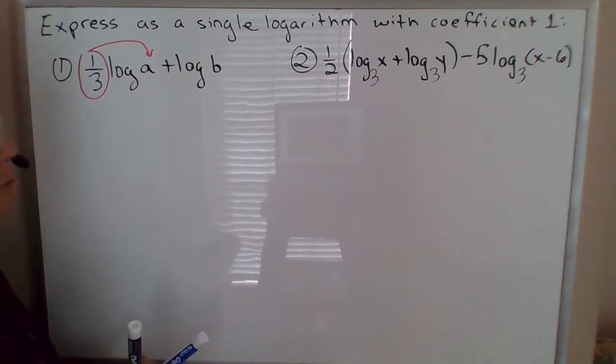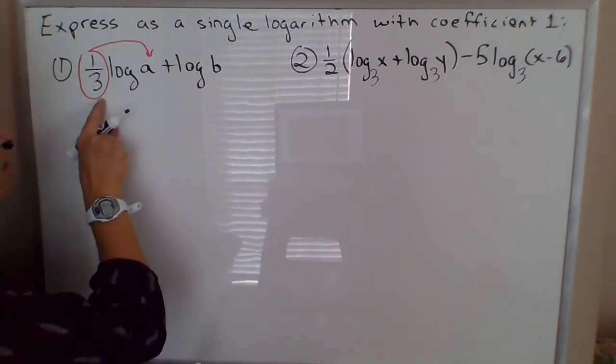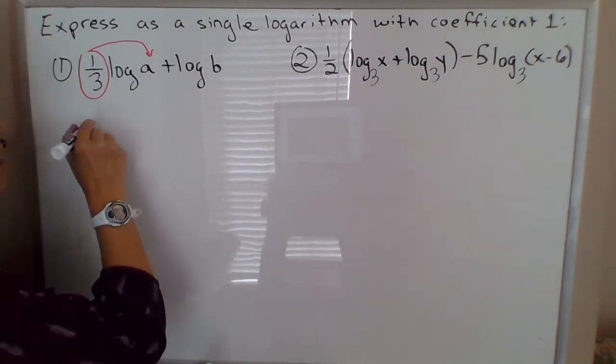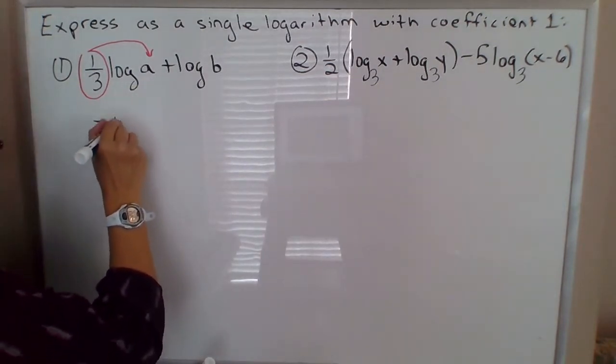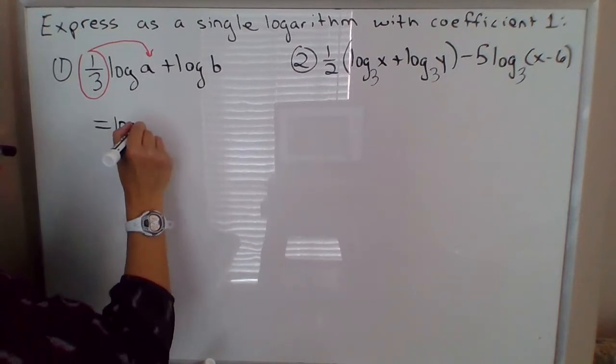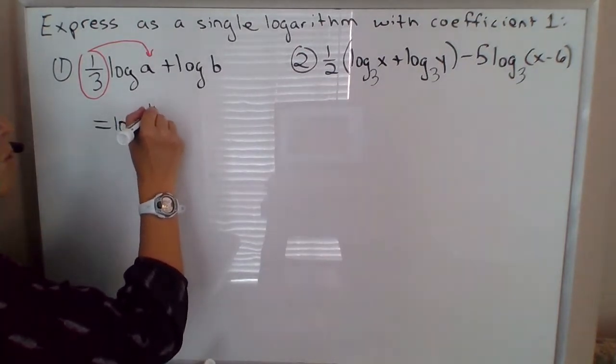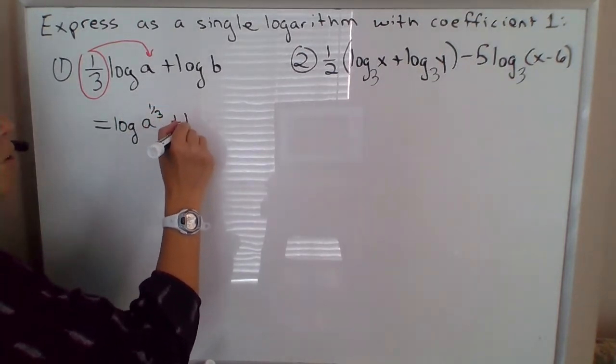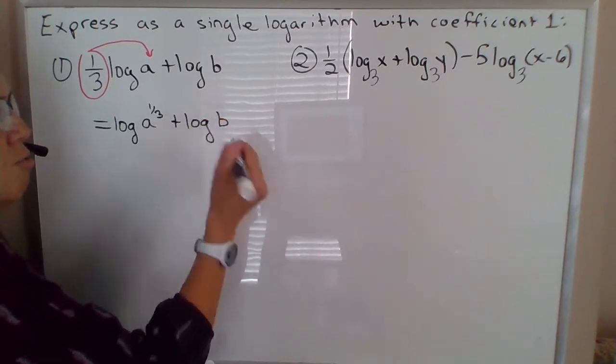So focusing on this example number one here, the first thing that I would recommend you do is to take this coefficient of 1/3 and put it up in the exponent. So this is log, this is the common log again, of a to the 1/3 power plus log of b.